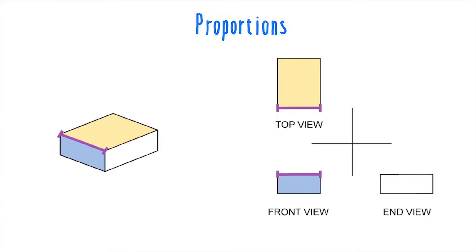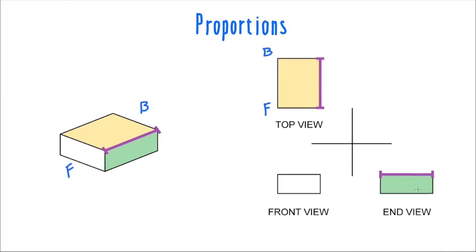You can also use the overall width of the top view to determine the overall width of the front view. The overall length of the object — seen by the length of the top view — is going to be the same in the end view. Since the end view always views the object directly from the right, the front-to-back length corresponds in the end view as well.